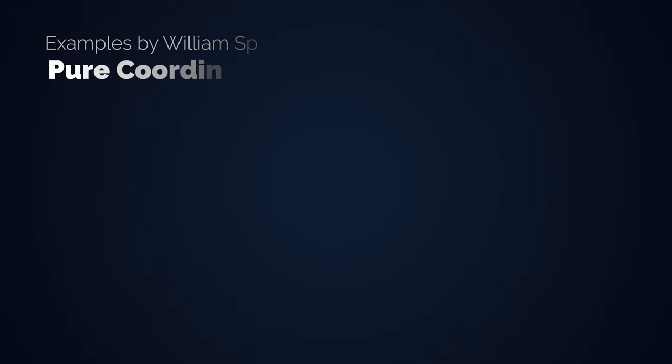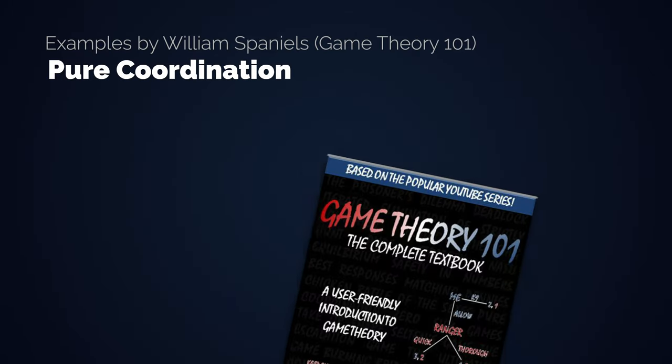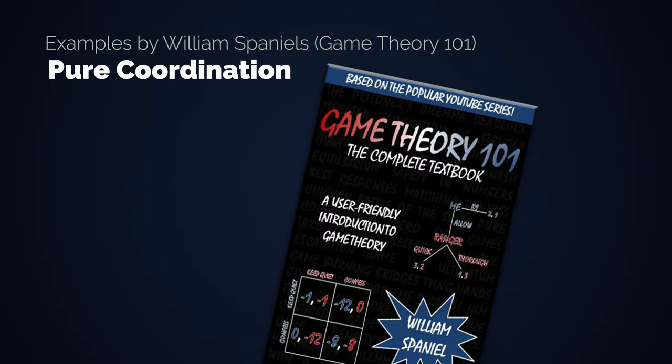Welcome back to another video. This time I want to walk you through a little bit of game theory, from Nash Equilibria to Schelling Points, which is something that is good to know even outside of the context of Bitcoin. Let's start right away with a few examples. These are from William Spaniel's Game Theory 101. You can find the link to his video in the video description.